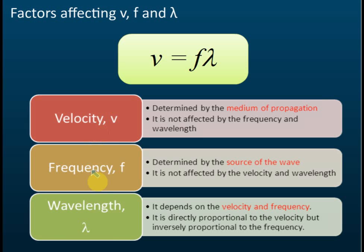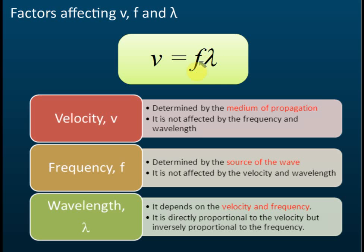Lastly, wavelength. Wavelength is affected by both velocity and frequency. It is directly proportional to velocity — so if speed is high, the wavelength is high. But it is inversely proportional to frequency — if frequency is high, the wavelength is low. So: frequency is affected by the source, velocity is affected by the medium, and wavelength is affected by both velocity and frequency.